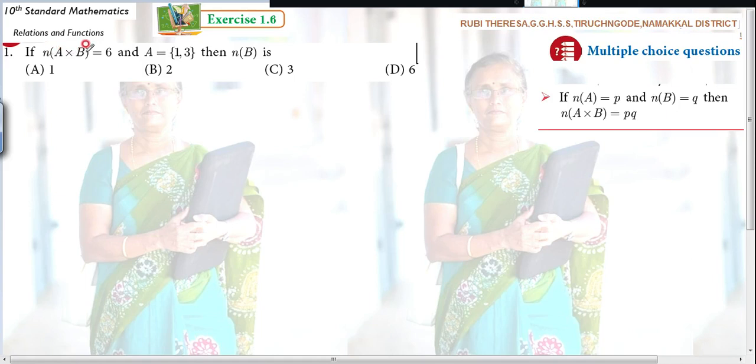n(A × B) equals 6. Cardinal number of A × B. That means how many pairs are there in A × B.